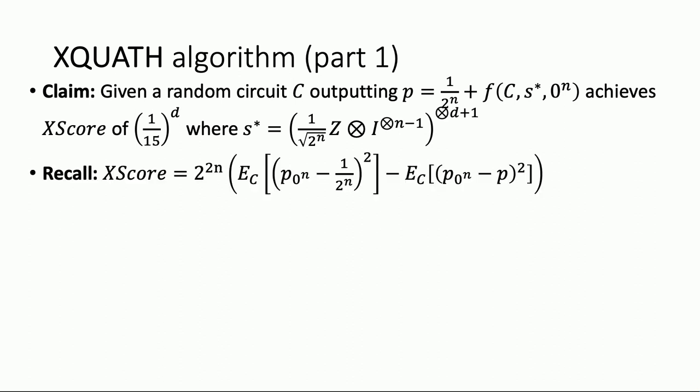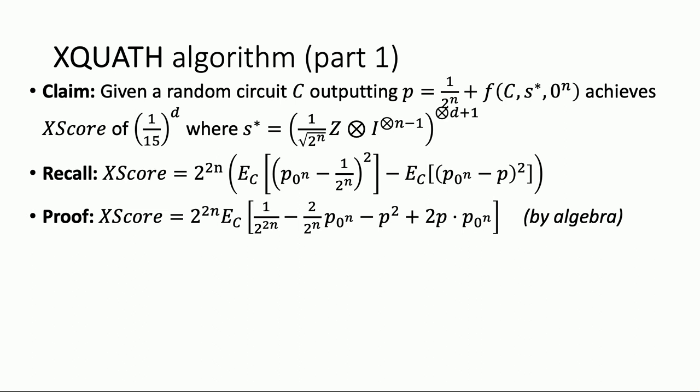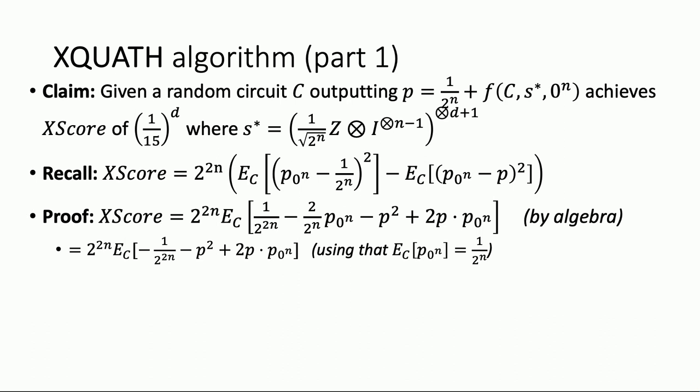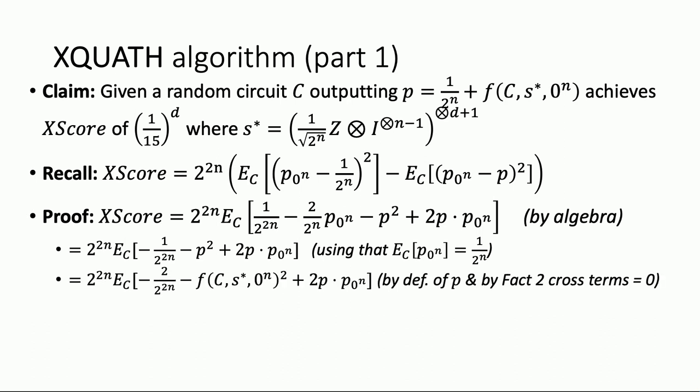Let's recall what we want to do: bound the X-score quantity. We expand the squares, subtract, and get cancellations. One thing we can use: the expectation over P0^(N) is one over two to the N — you'll prove this in the problem set — which simplifies things. That gives us one over two to the 2N minus two over two to the 2N, giving minus one over two to the 2N. Then we use the fact that the expectation of the value of path S-prime itself — not the square — is zero, which cancels all linear terms.